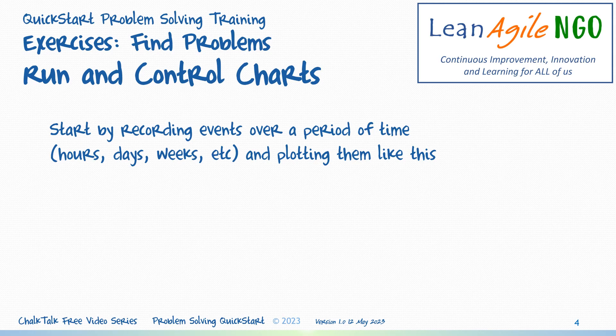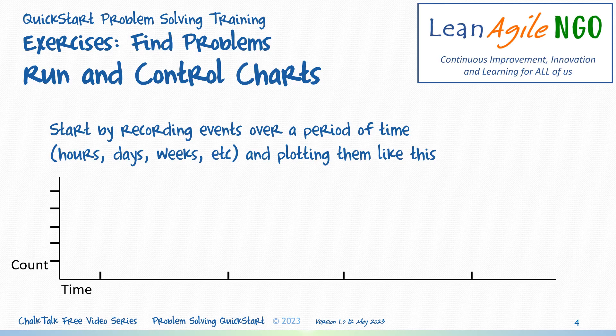Let's use an example where we count the number of customer support calls. Each day's call count is represented by a dot on the timeline. A large number of calls in a day may suggest a quality problem with the product or service, a problem with documentation or training, or something else. So to start, first we draw a horizontal time series line and a vertical count line like this.